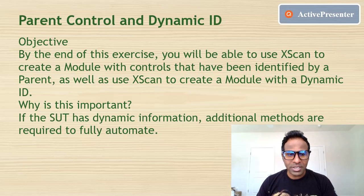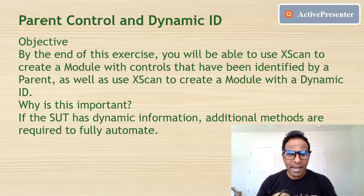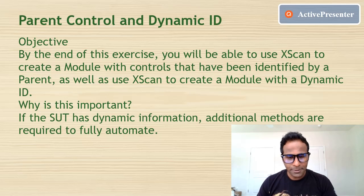The parent control property helps uniquely identify the object. For dynamic ID: if your object in the system under test is dynamic — meaning the property of that object keeps changing — then you cannot use a static ID; you have to use a dynamic ID. Now let me walk you through real-time examples using the Tosca tool so you can understand all three concepts: dynamic comparison, parent control, and dynamic ID.